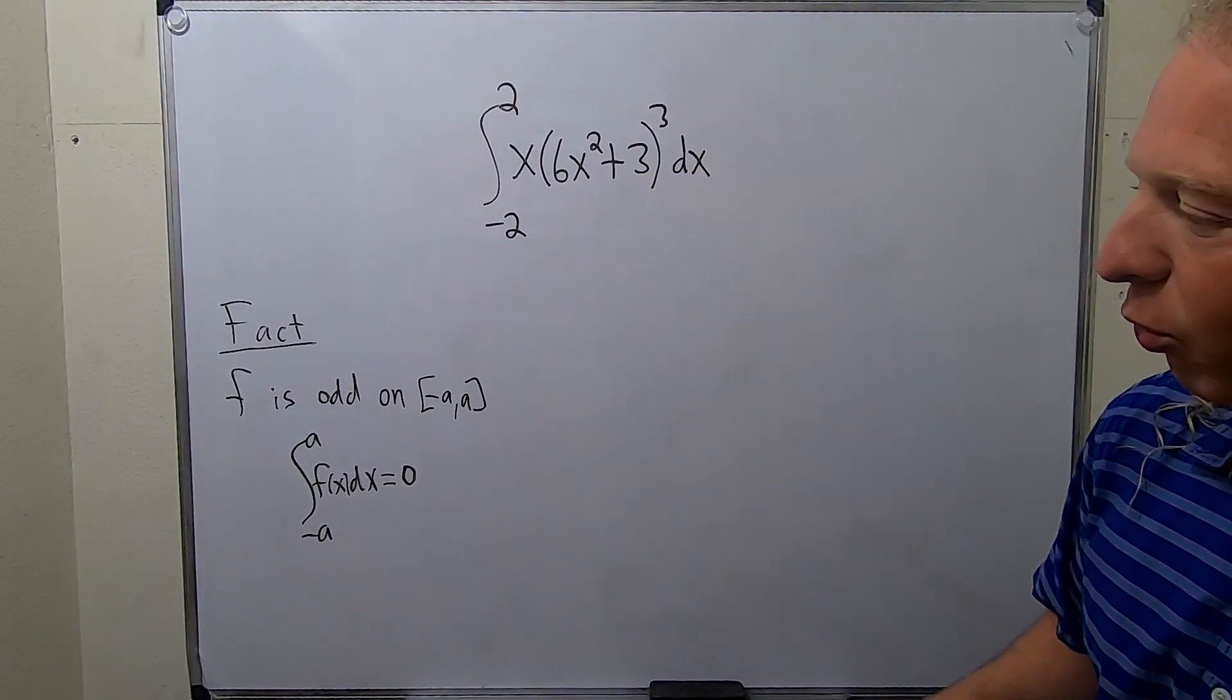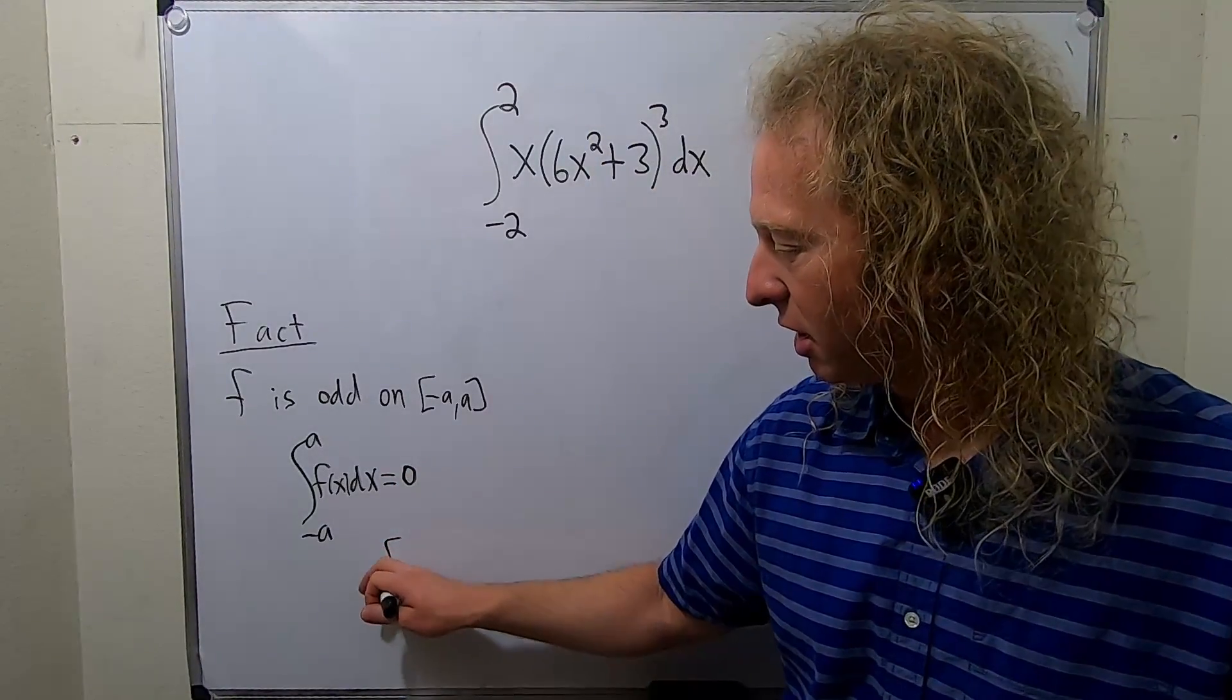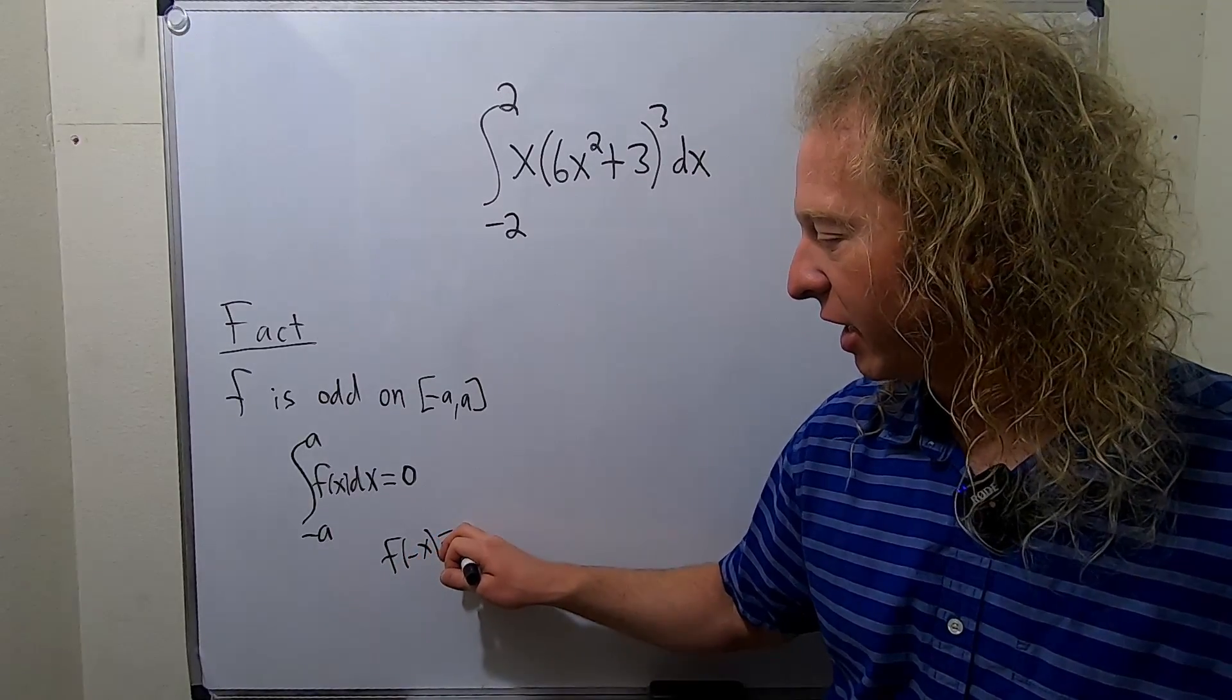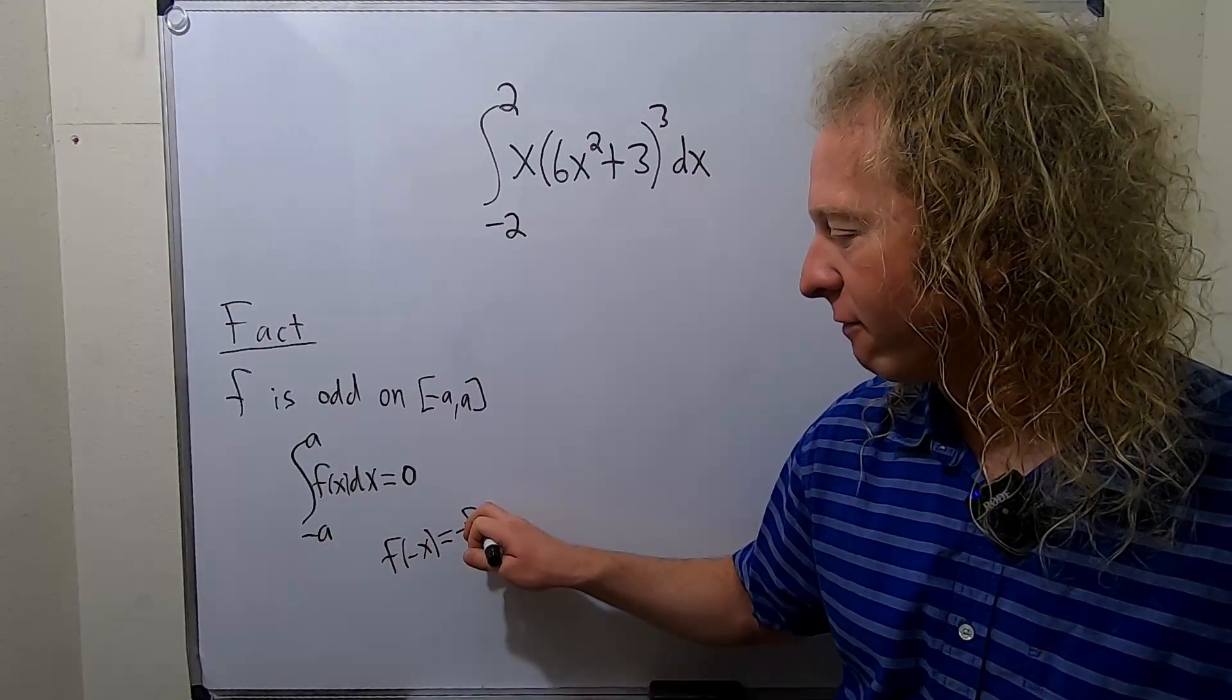So odd basically means when you plug in negative x into the function, the negative comes out and you get negative f of x.